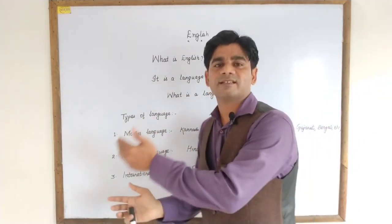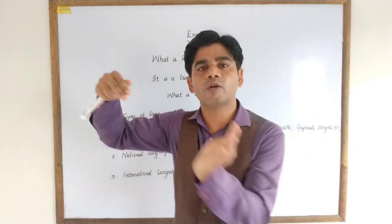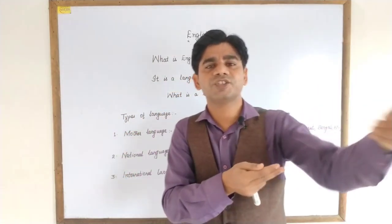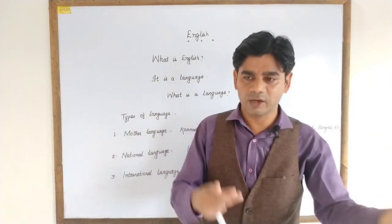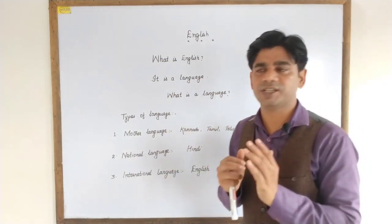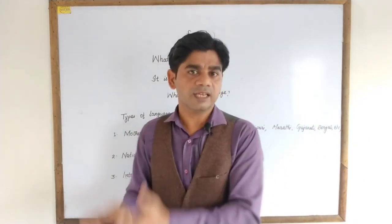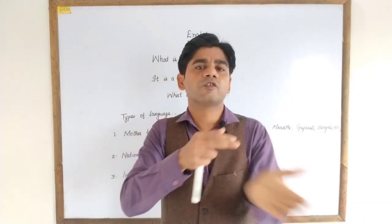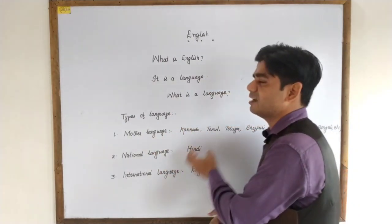Now we have one more language: national language. What is national language? It is a language which is not only spoken in one state but also spoken throughout all the states of a country. Every country has its own national language. For example, Pakistan, Sri Lanka, Bangladesh, China, Australia, Russia, Egypt, South Africa — all these countries have their own national languages. If you talk about our country India, Hindi is the national language. Why? Because it is spoken not only in Maharashtra, Jharkhand, Bihar, West Bengal, and Uttar Pradesh, but also throughout all the states of our country.